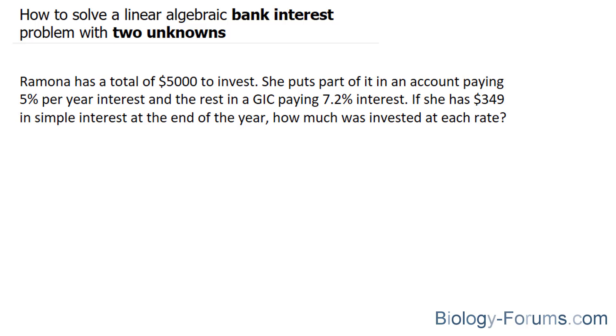The question reads, Ramona has a total of $5,000 to invest. She puts part of it in an account paying 5% per year interest and the rest in a GIC paying 7.2% interest. If she has $349 in simple interest at the end of the year, how much was invested at each rate?